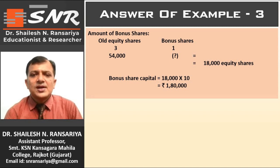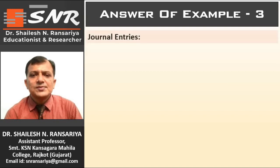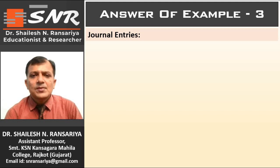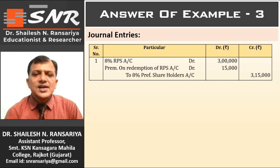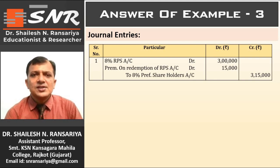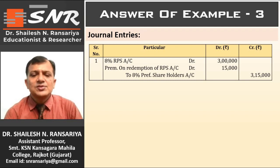Now we can pass journal entries in the books of the company. The first entry is for the RPS. Here in this example, the RPS is fully paid up, so a share call is not required. We can directly start journal entries with the RPS. Entry: 8% RPS account debit Rs. 3,00,000; Premium on redemption of RPS account debit Rs. 15,000; To 8% preference shareholders account credit Rs. 3,15,000.